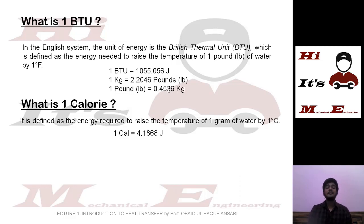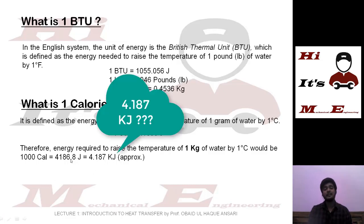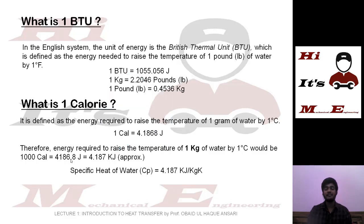Suppose we want to calculate the energy required to raise the temperature of one kilogram of water instead of one gram. It would obviously be 1000 times that value — so 1000 calories — which equals approximately 4.187 kilojoules. Look at this value carefully: it is actually the specific heat of water, 4.187 kJ/kg·K. Specific heat is the amount of heat required to raise the temperature of unit mass of a substance by one degree Celsius or one kelvin. Now you know where the definition of specific heat actually came from.